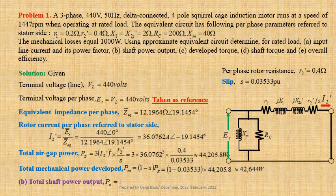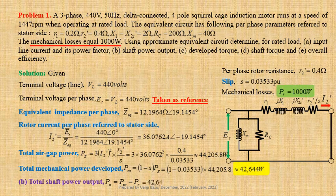Total shaft power output Po = Pm − PR. Given mechanical losses PR = 1000 W. Therefore, Po = 42644 − 1000 = 41644 W.